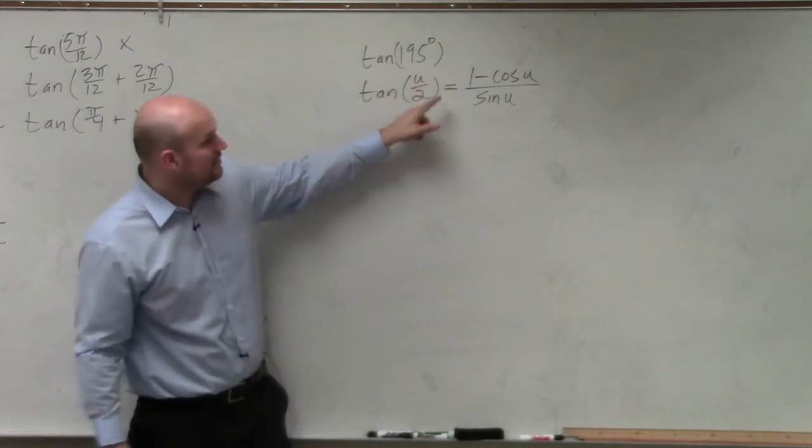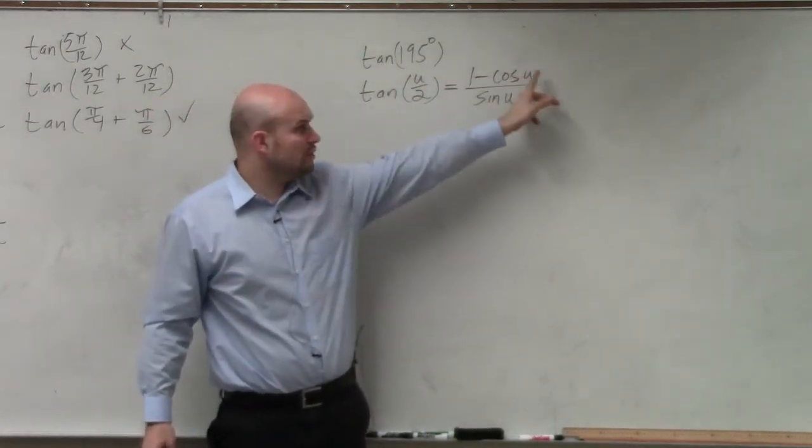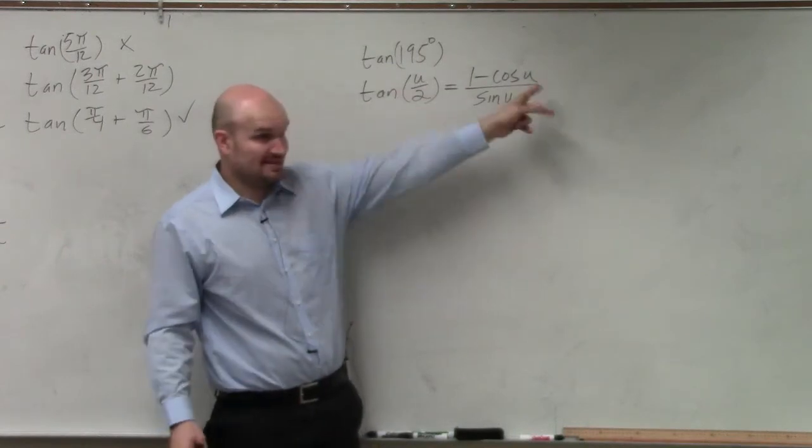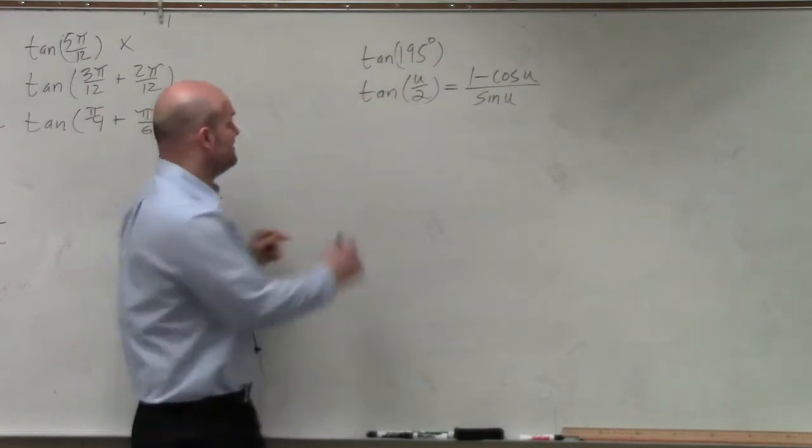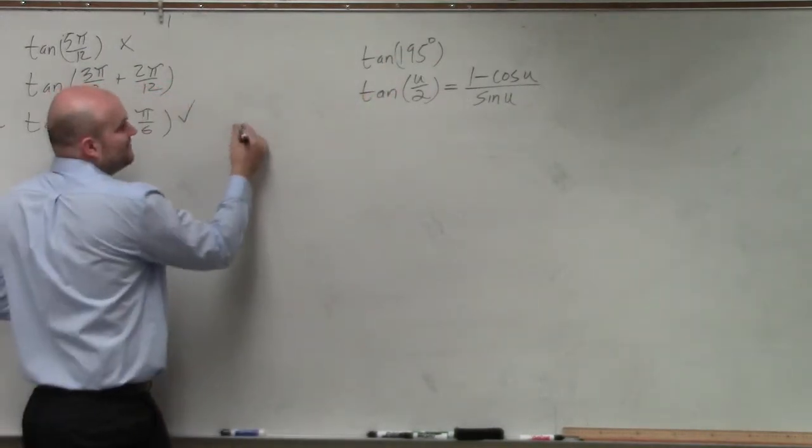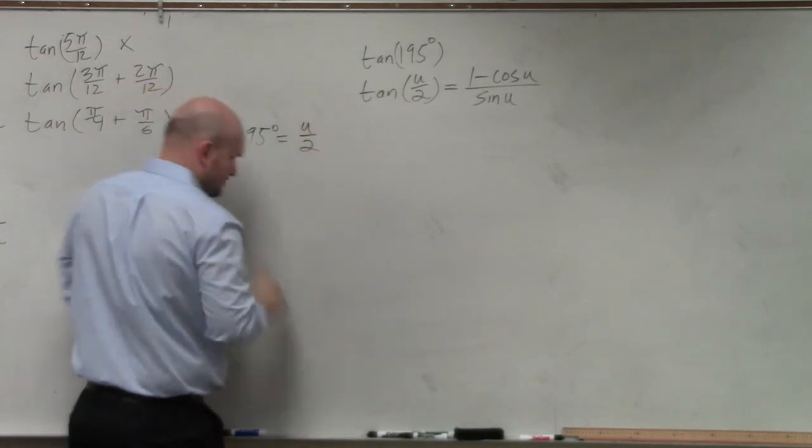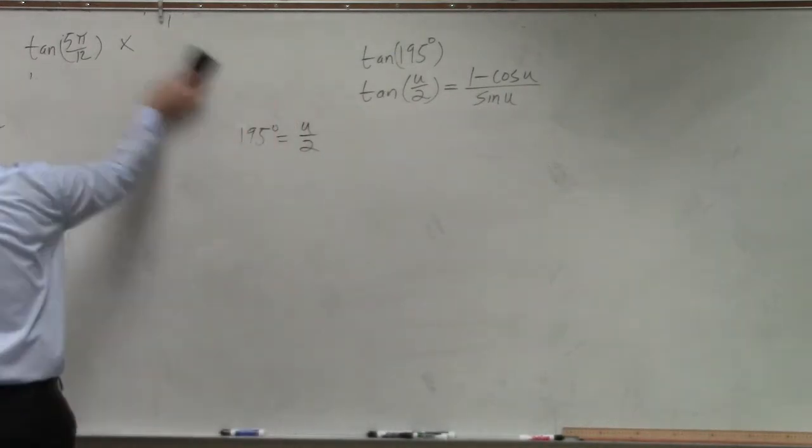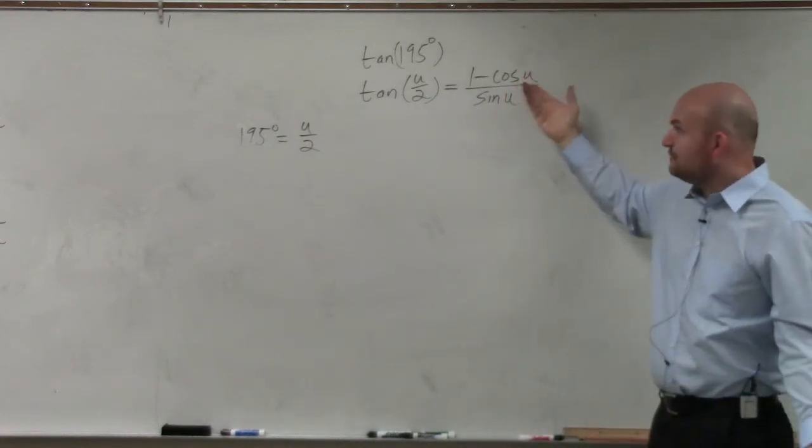Tangent of u over 2 equals cosine of u. It's not saying u over 2, cosine of u over 2. It's not saying that. It's saying u over 2, and then that's u. So then 195 is equal to u over 2. So for the formula, we need to figure out what u is. So how do we figure out what u is?